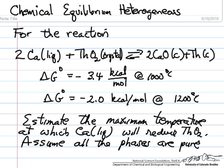We want to know what's the maximum temperature where the calcium will actually reduce the thorium oxide to thorium metal. A critical aspect is we are assuming all these phases are pure. In other words, the thorium solid does not mix with the calcium oxide solid. They are in separate phases and this dramatically affects the equilibrium.